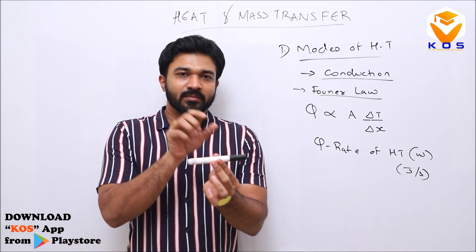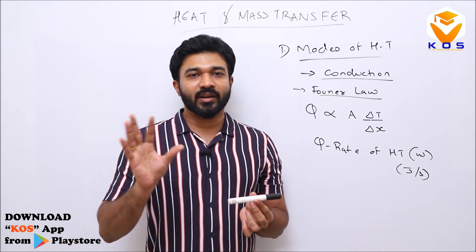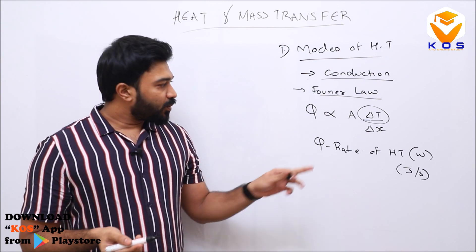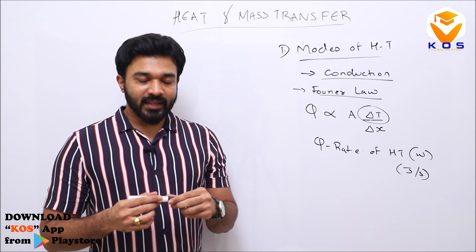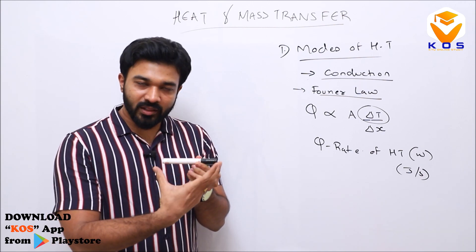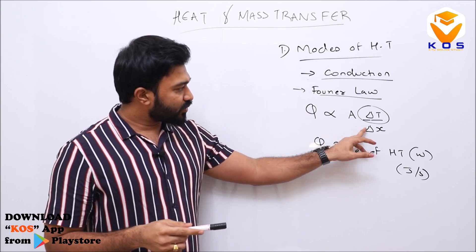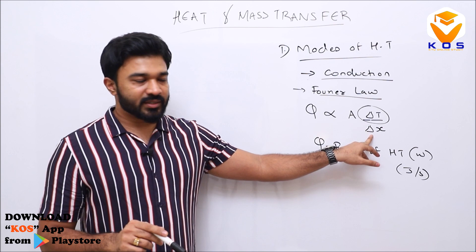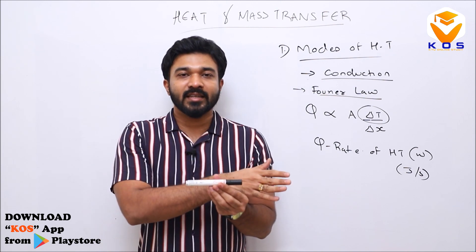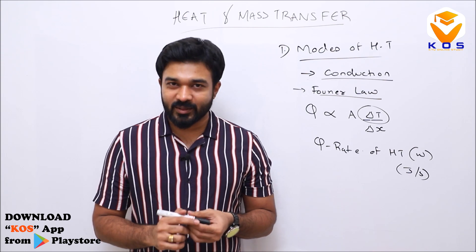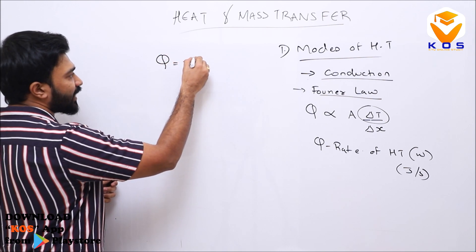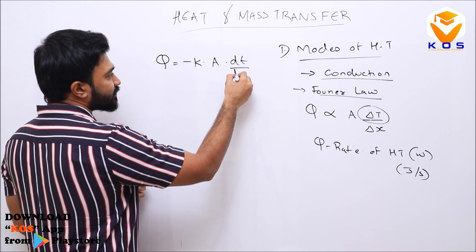The rate of heat transfer is directly proportional to the temperature difference and inversely proportional to the distance between the two points. It is also directly proportional to the area — a larger area means a higher rate of heat transfer. Introducing a proportionality constant k, the Fourier equation becomes: q = −k × A × dT/dx.